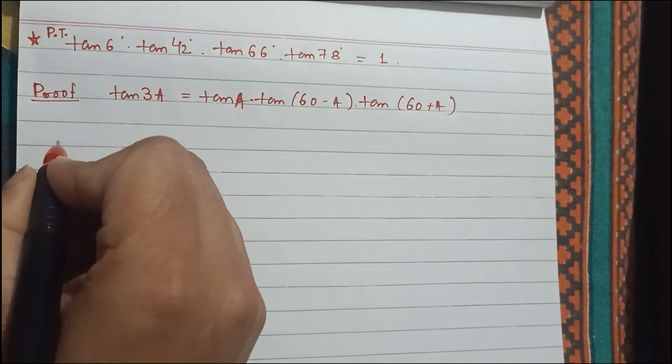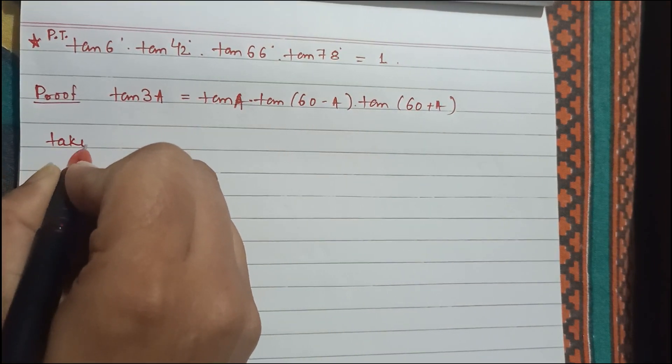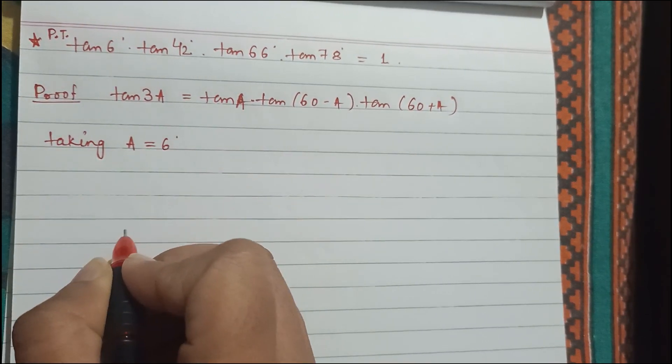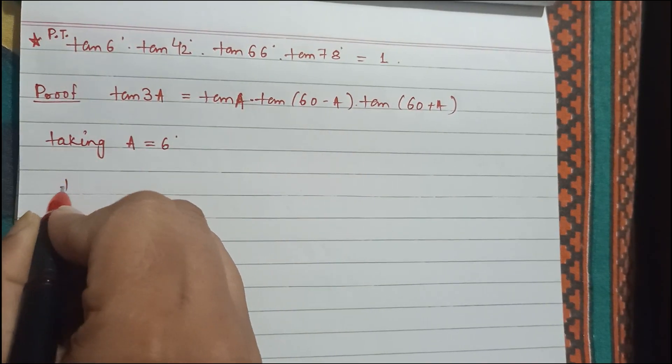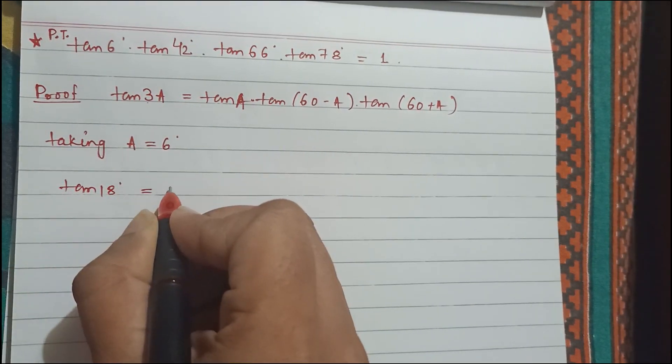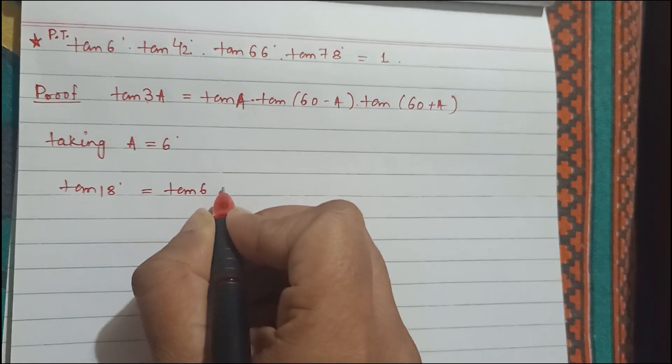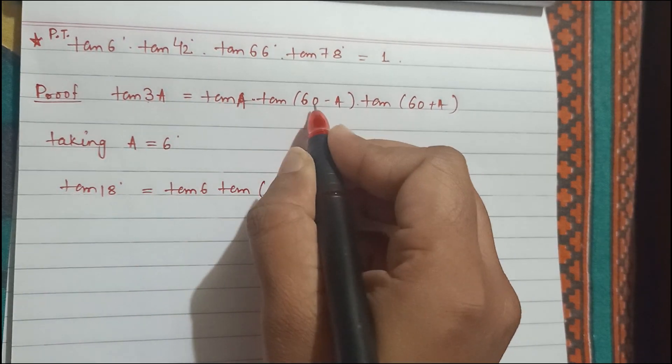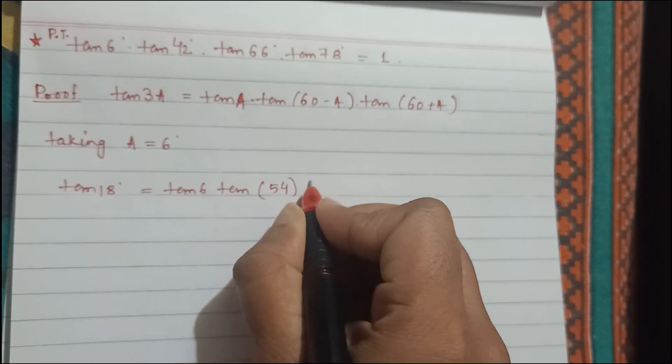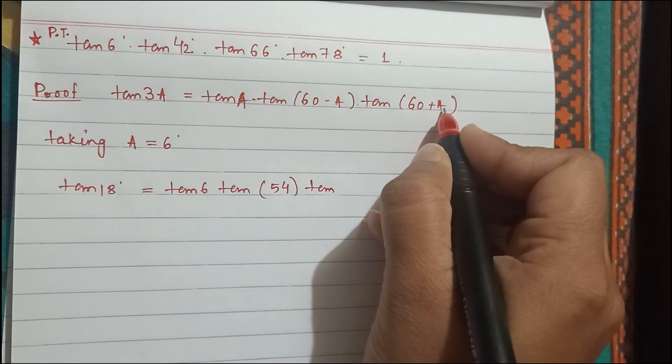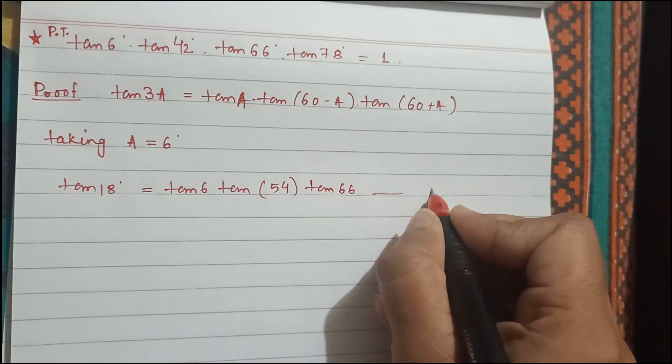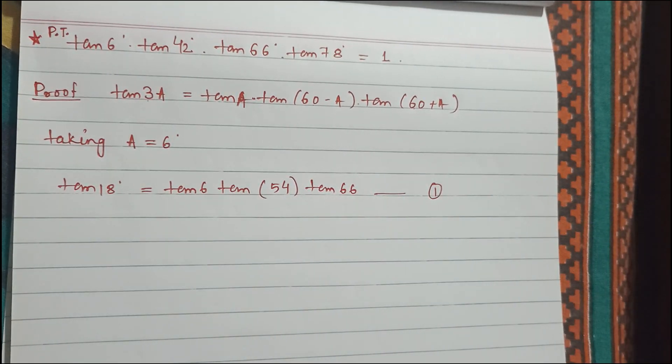Taking a equals to 6 degree, we will get tan 18 degree equals to tan 6 into tan 54 into tan 66. So this one we will name it as equation 1.